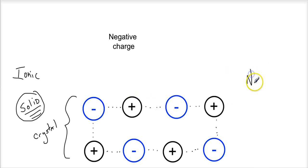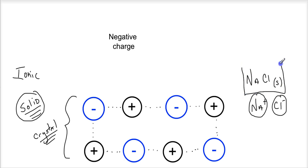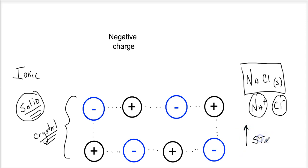We write sodium chloride — table salt — as NaCl solid. It's really a sodium ion attracting a chloride ion. You don't see any charges in the compound because they cancel out. But it's not just one sodium ion and one chlorine ion. Ionic compounds, because they make crystals, make empirical formulas — the lowest ratio. So when we say sodium chloride solid, we mean the lowest ratio of the ions: one sodium ion and one chlorine ion. These compounds are very, very stable — extremely stable — which means they're low energy. Their stability comes from the three-dimensional crystal lattice and the strong attraction between ions.